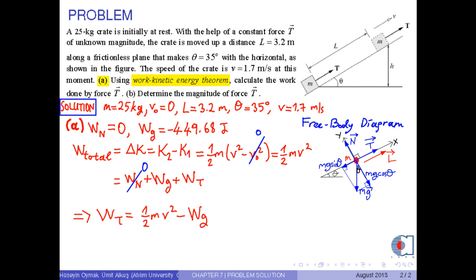Then we get an expression for Wt as 1 over 2 times M times V squared minus Wg. With the corresponding numerical values, we obtain the work done by force T as 485.81 joules, which is approximately 486 joules in three digits.